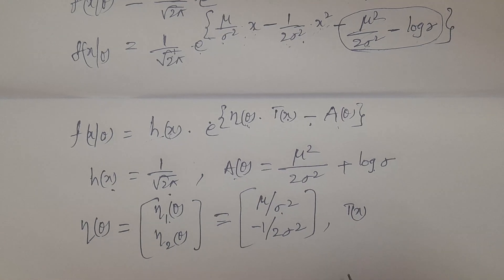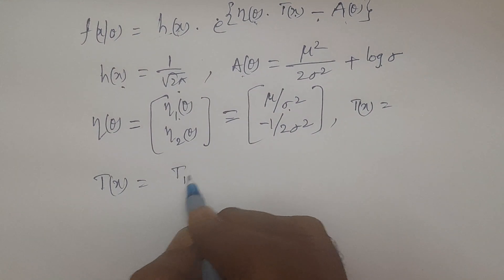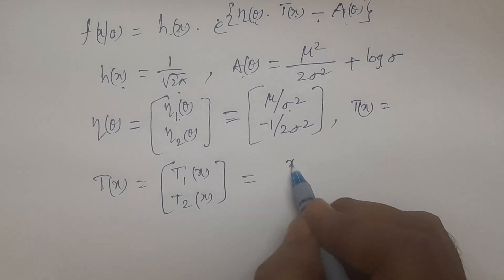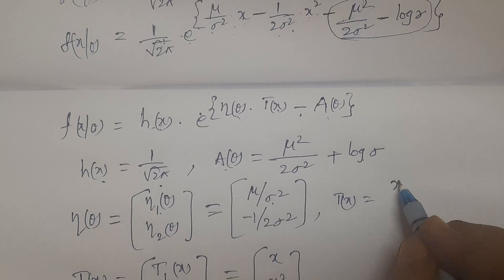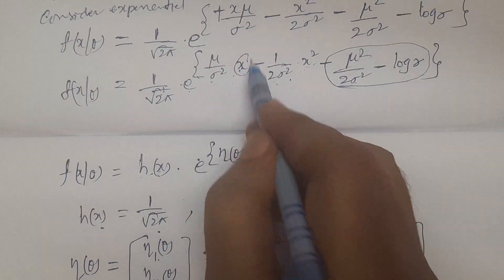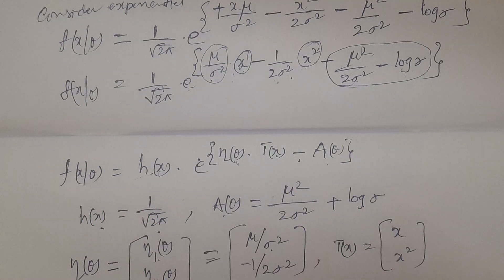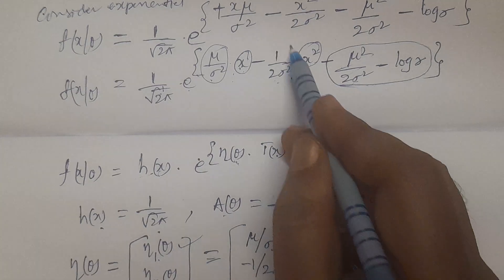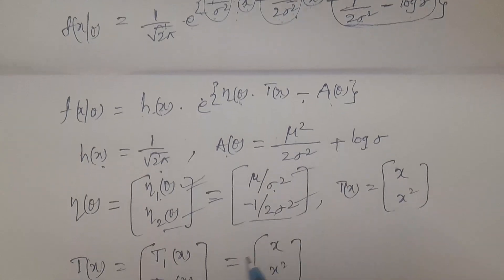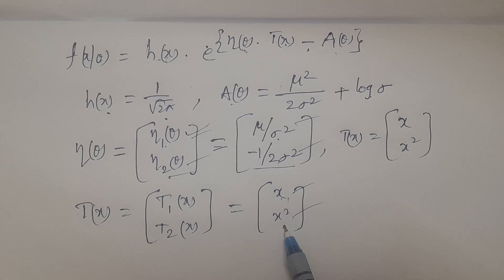T(x) consists of two functions: T₁(x) = x and T₂(x) = x². So η₁(θ) = μ/σ² multiplies T₁(x) = x, and η₂(θ) = −1/(2σ²) multiplies T₂(x) = x². These are two sufficient statistics — one for μ and one for σ², corresponding to the mean and variance of the normal distribution.